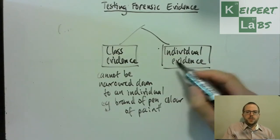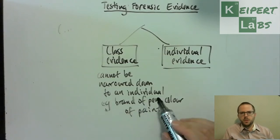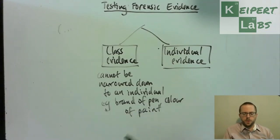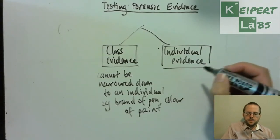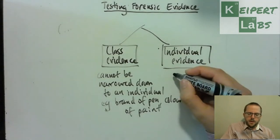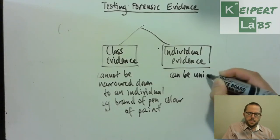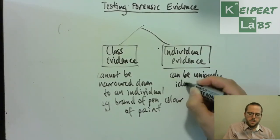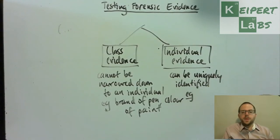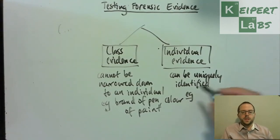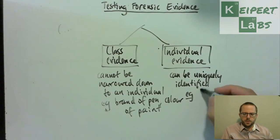Whereas if we can't narrow down class evidence to a specific individual item or person, that's where individual evidence can be uniquely identified. There are fewer types of evidence that fall into this category, but some specific ones you should be familiar with.